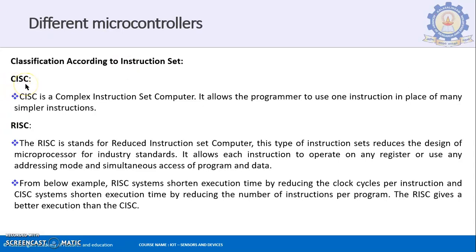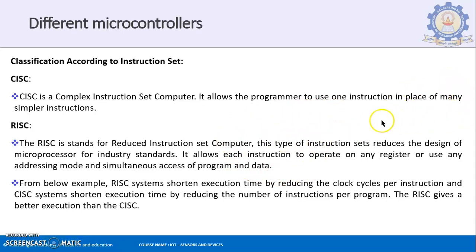CISC stands for Complex Instruction Set Computing and RISC stands for Reduced Instruction Set Computing. CISC is a complex instruction set computer — it allows a programmer to use one instruction in place of many simpler instructions. You can combine simpler instructions into a complex one, so five instructions for a task can be replaced by a single instruction. That is the advantage of CISC.